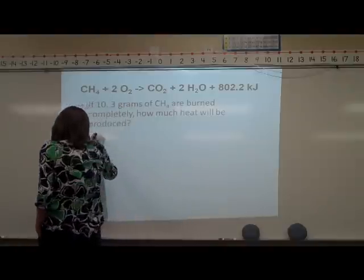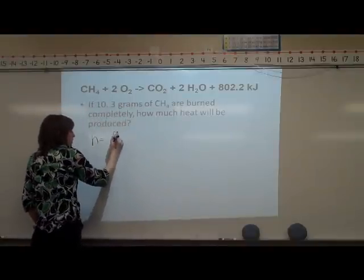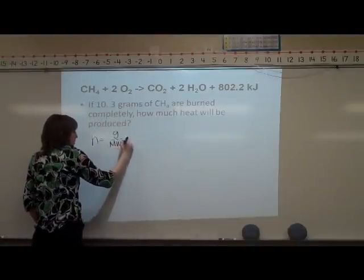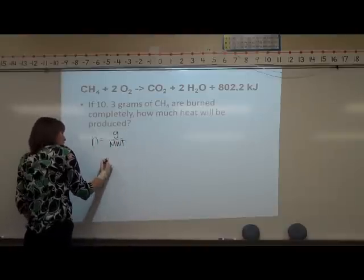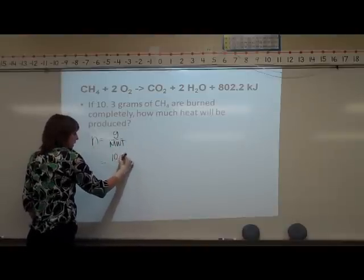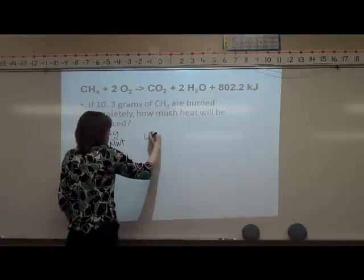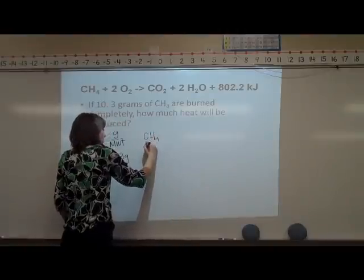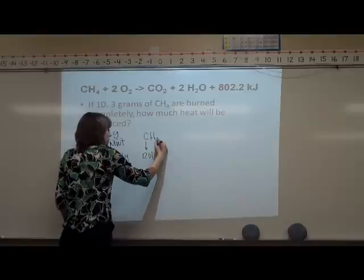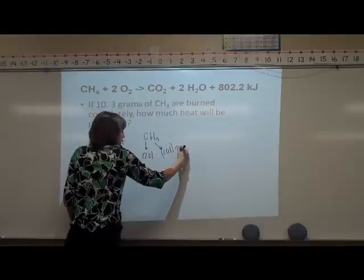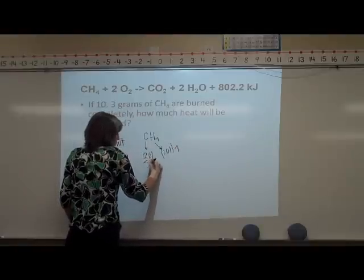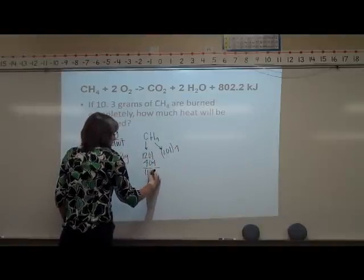The equation we're going to use is n equals g over molecular weight. N is moles, g is grams, and then the molecular weight. We're going to take 10.3 grams and grab the molecular weight of CH₄. Carbon is 12.01 and hydrogen is 1.01 and we have four of those. We would have plus 4.04 gives us 16.05.